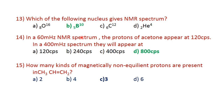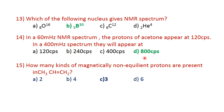In the 600 MHz spectrum, the proton of acetone appears at 120 CPS. The delta value formula gives 120 divided by 60 equals 2. For a 400 MHz spectrum, 2 equals x divided by 400, so x equals 2 times 400, which is 800 CPS. The signal appears at 800 CPS. Option D is correct.